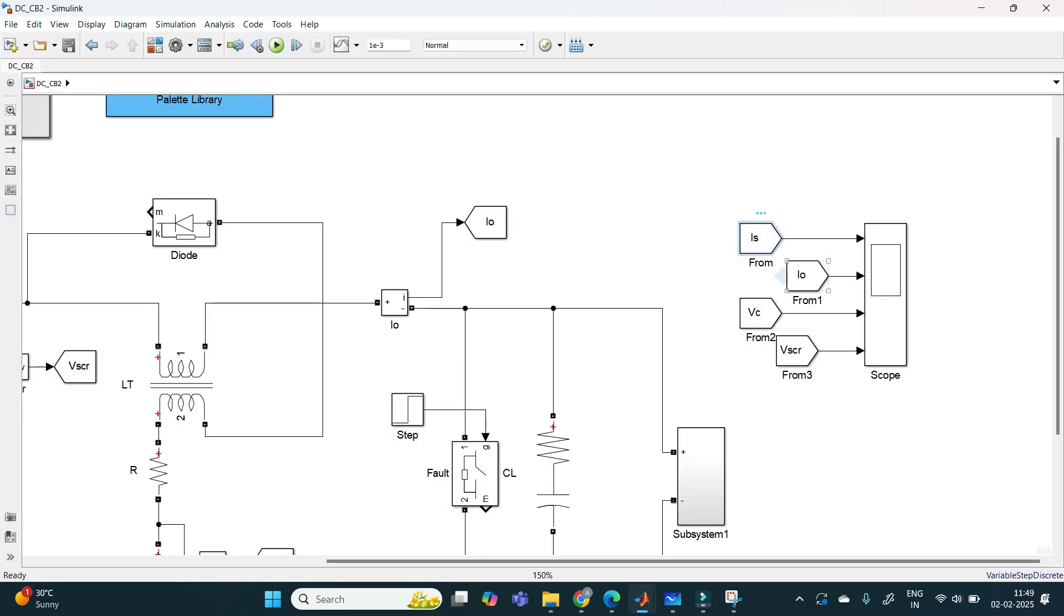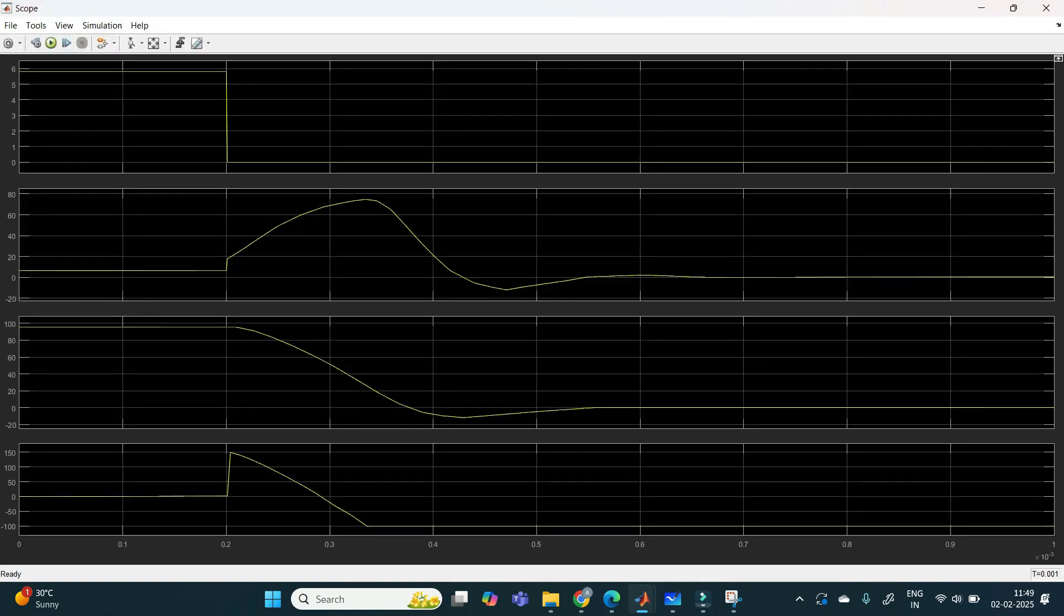First one is source current. Second one is load current. Third one is capacitor voltage. And fourth one is SCR voltage. Here you can see, source current and load current both are 0 when the fault occurred. When the fault occur at 0.2 seconds, automatically our current will be 0. That is the thing we need to understand.